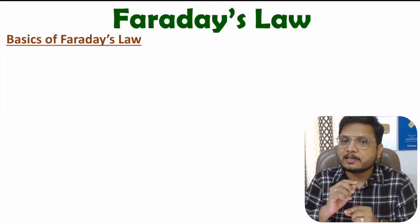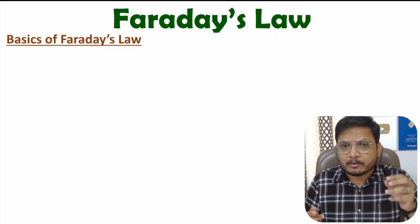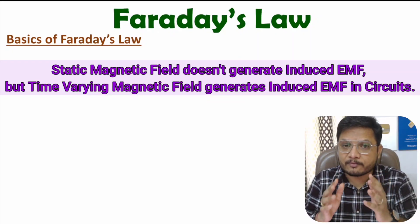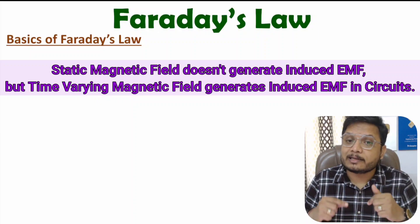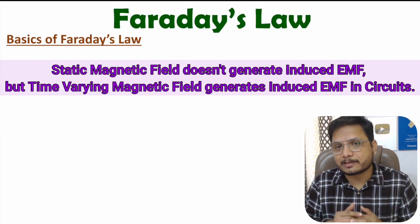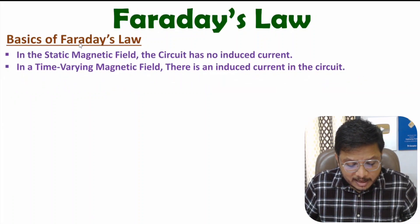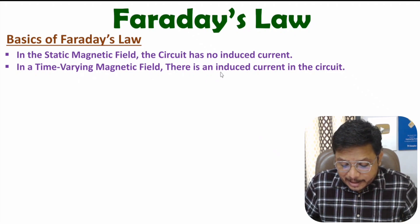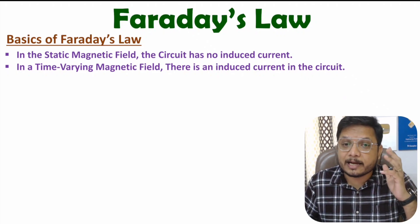Faraday conducted a series of experiments and identified that with a static magnetic field there is no induced current in the circuit. But for a time-varying magnetic field, there is induced current in the circuit, and that induced current happens because of induced EMF.